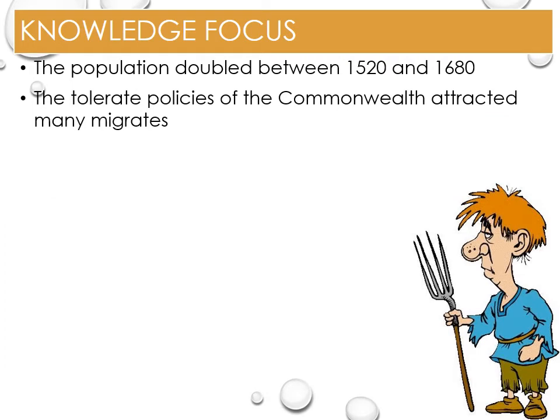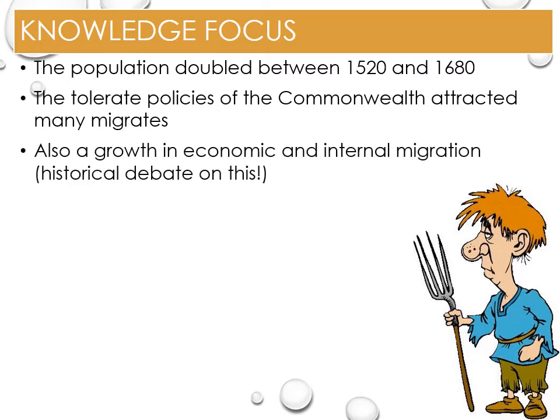In the 1650s, the tolerant policies of the Commonwealth and Protector attracted many migrants from Europe escaping Catholic persecution. This saw the population grow, as well as technological changes in the production of cloth and agricultural methods. There was also growth in the economic and internal migration of the English population, which of course had both positive and negative effects on the population and the economic viability of certain areas.